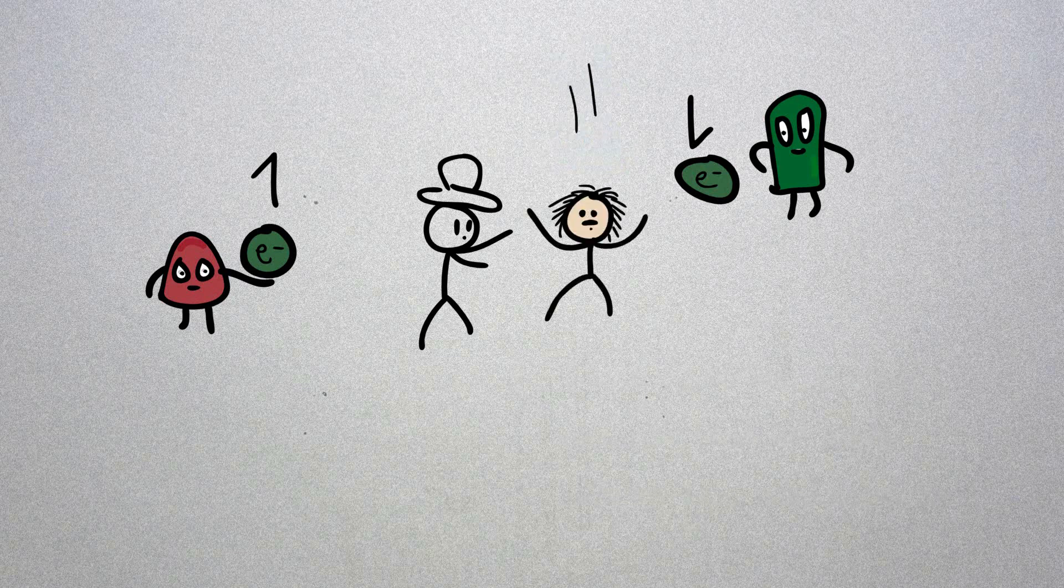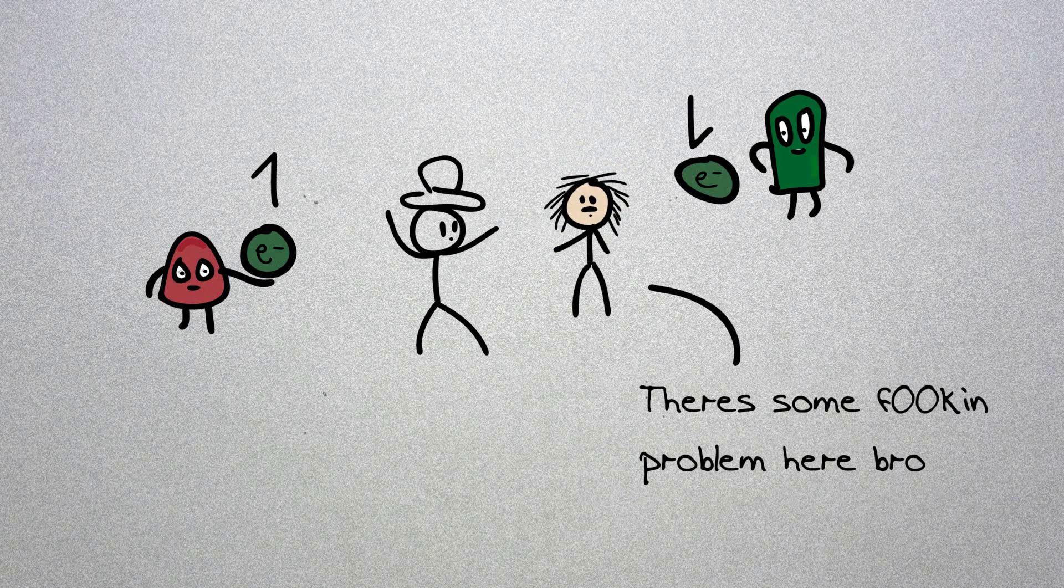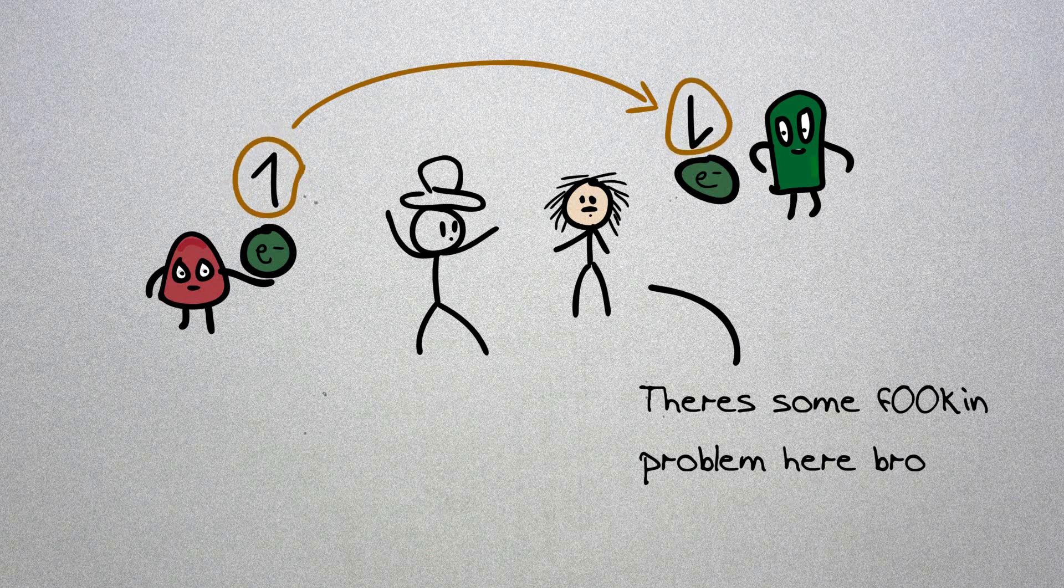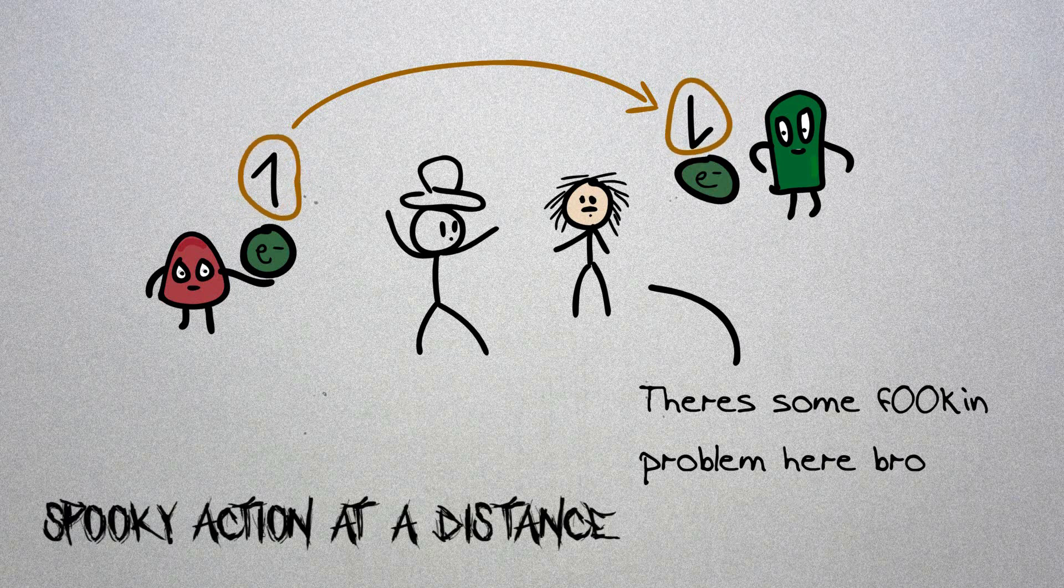And this is where Einstein felt there was a problem because it was as if the act of Alice measuring her electron spin somehow affected Bob's spin. So that once Alice had found the spin to be spin up somehow magically seemed to transmit some kind of influence to Bob's spin to make sure that it was spin down. This is the most famous spooky action at a distance.